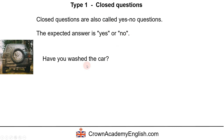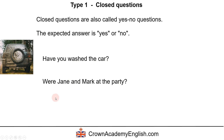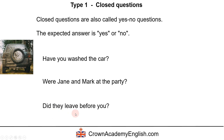'Have you washed the car?' The answer is either yes or no — 'Yes, I have washed the car' or 'No, I haven't washed the car.' We're not asking for information about the color or age of the car — we simply want to know yes or no. Another example: 'Were Jane and Mark at the party?' — yes, they were, or no, they weren't. 'Did they leave before you?' — yes, they did, or no, they didn't. In all of them, it's either yes or no.